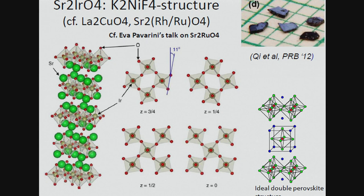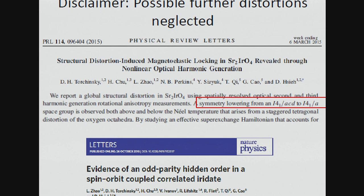Strontium iridate crystallizes in the potassium nickel fluoride structure — a layered perovskite with additional distortions. You have a layer of iridium surrounded by oxygen octahedra, with rotations of these octahedra around the z-axis by 11 degrees. Without that, it would be exactly isostructural to the celebrated lanthanum cuprate and also to strontium ruthenate. A little disclaimer: I neglect possible additional distortions that experimentalists were discussing, because their effect should be really small.